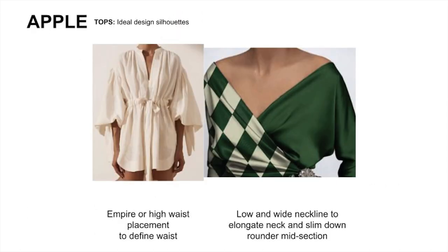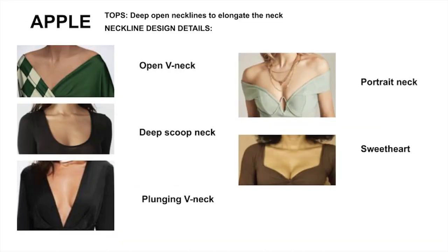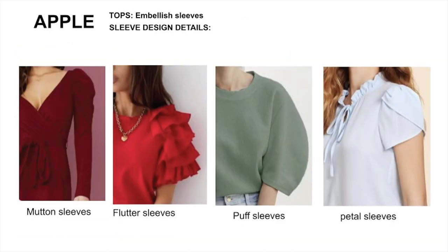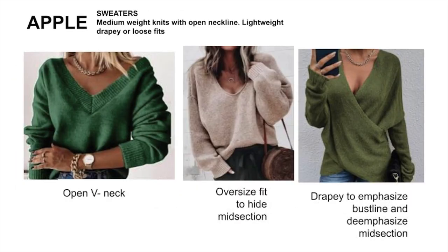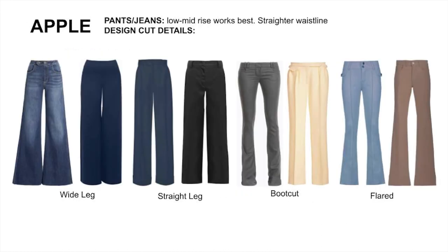For tops, the emphasis should be around creating a waistline above the natural waist, and elongating the neckline by opening it up. Here are some neckline examples to offset the thick midsection, plus sleeve design details and cuts that work to offset it. For pants and jeans, low to mid-rise works best for short torsos and full hips. Do not wear tapered legs, nipped waist, or high rise — it will give you a muffin top or a pooch.